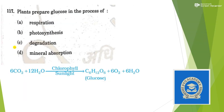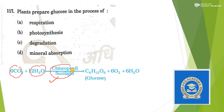Next: plants prepare glucose in the process of photosynthesis, in which carbon dioxide and water act in the presence of chlorophyll and sunlight to form glucose. So the answer should be option B — photosynthesis.